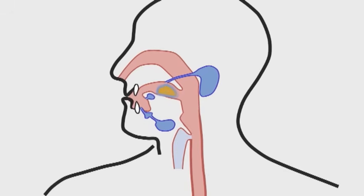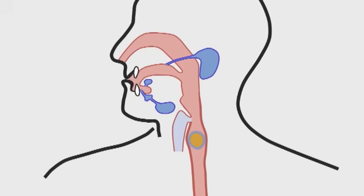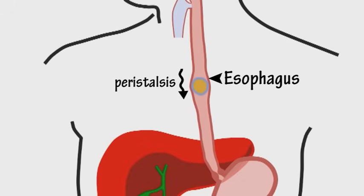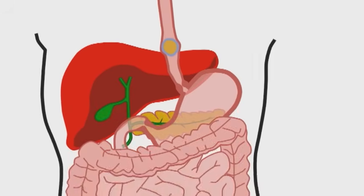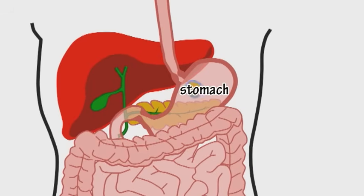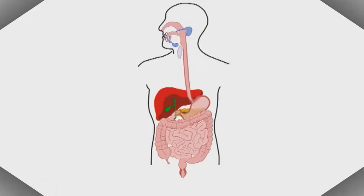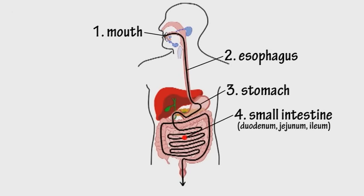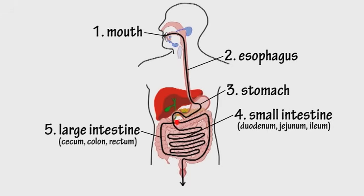The food becomes a bolus and if followed down the esophagus after it is swallowed, waves of peristalsis push it right along to the stomach where you'll find acid that is strong. Do you know the general direction that food travels during the process of digestion?